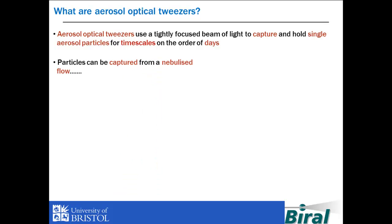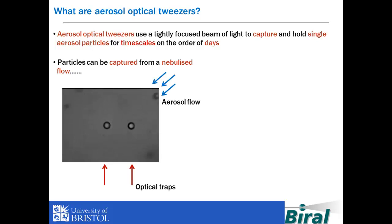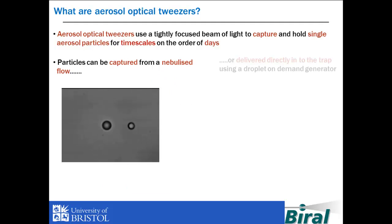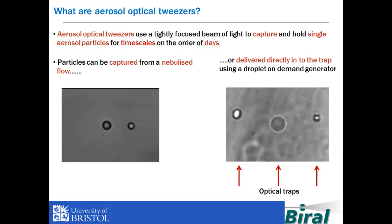We can capture particles from a nebulised flow of aerosol, as seen in the video here, which shows the loading of two adjacent optical traps. Alternatively, particles can be transferred directly into the trap using a droplet on demand generator. This video shows the repeated loading of three optical traps using targeted droplet generation.